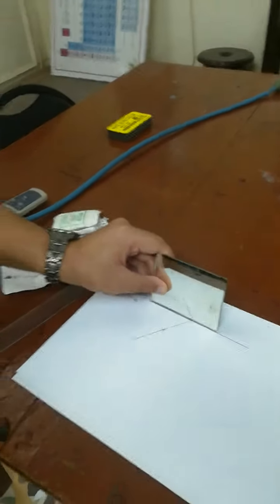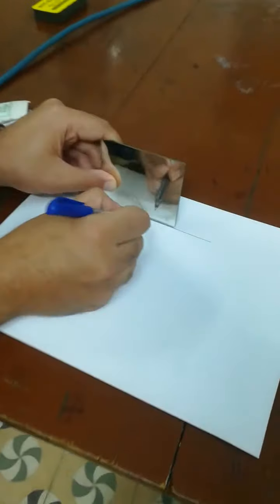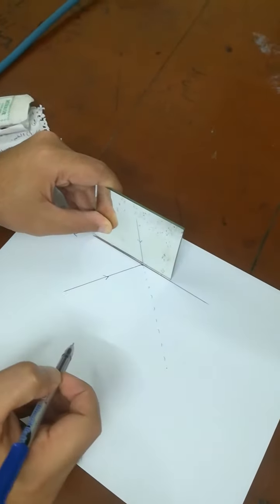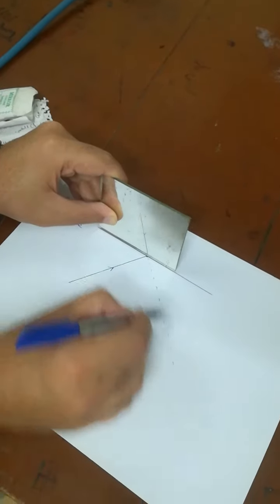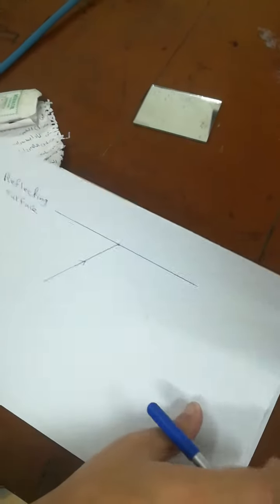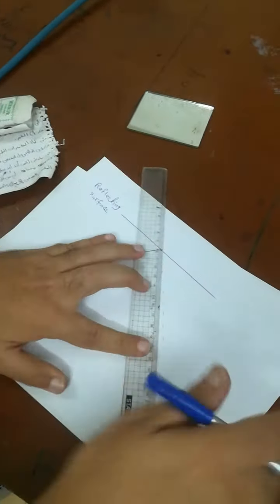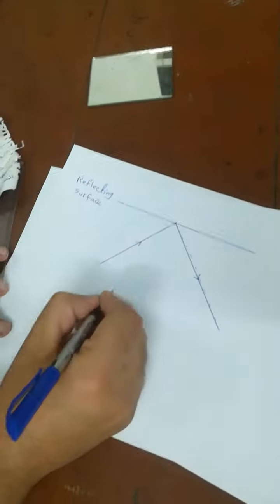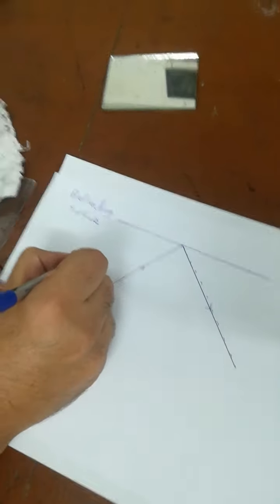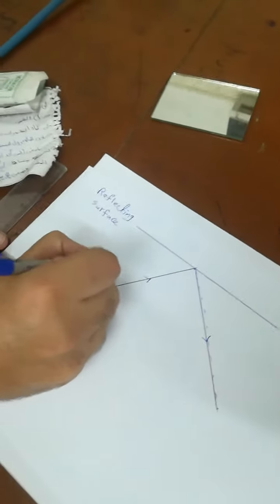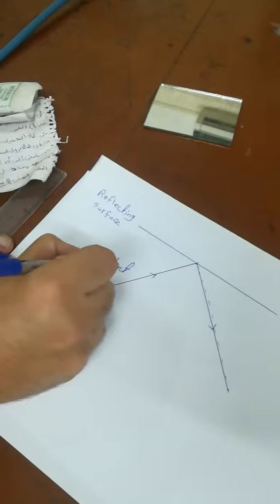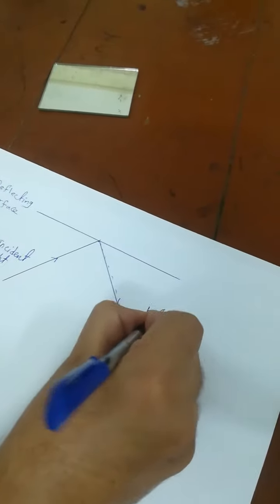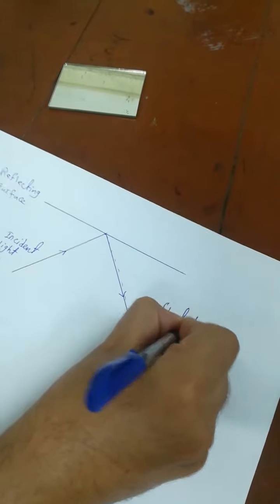This line is the reflection. But when we make the extension for it, we have another line here. This line will be the reflected line. The first we name the incident light ray, and the second will be the reflected light ray.